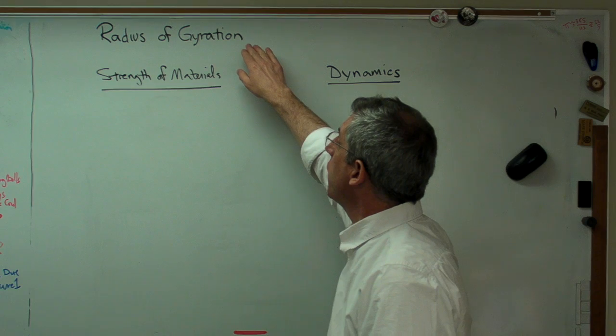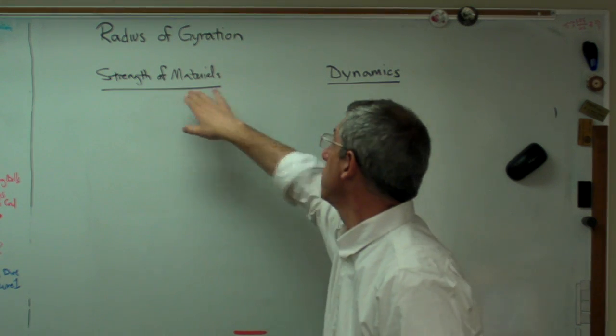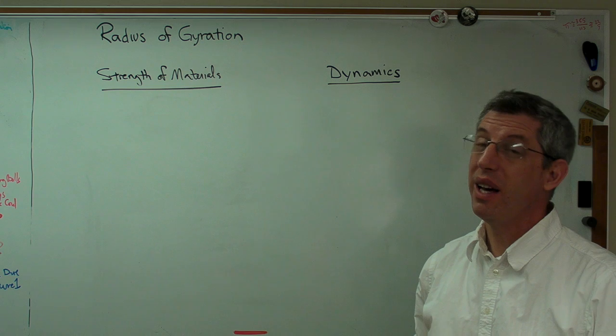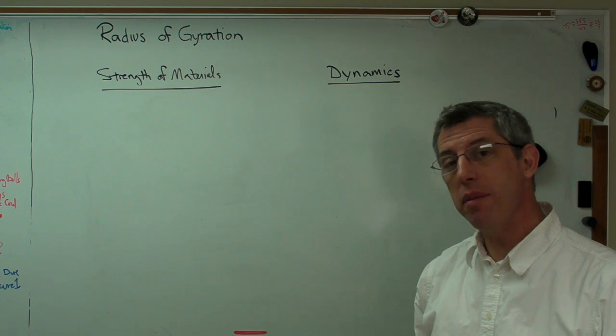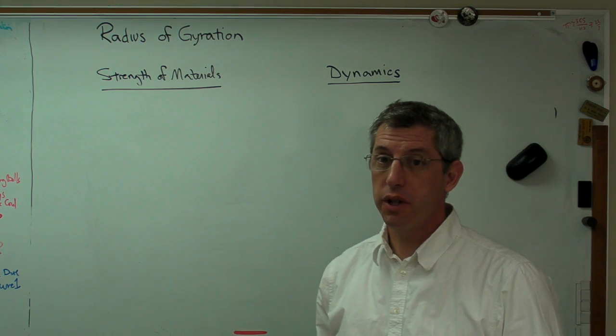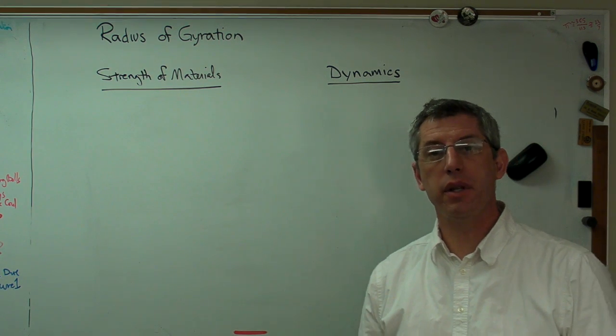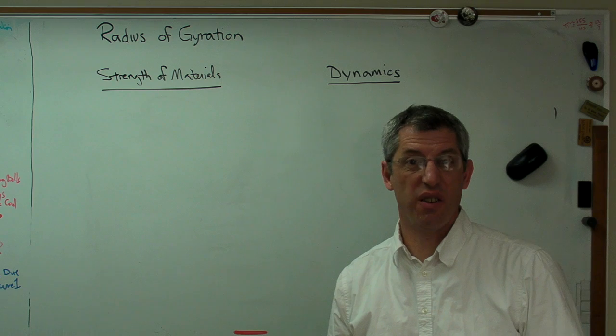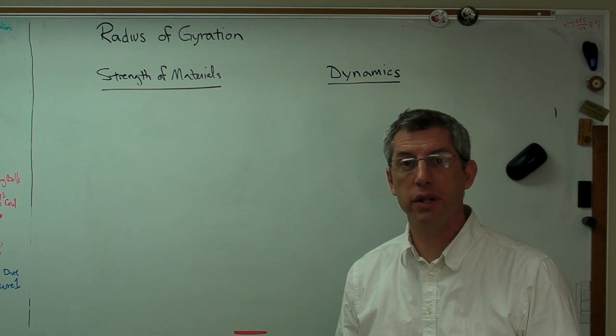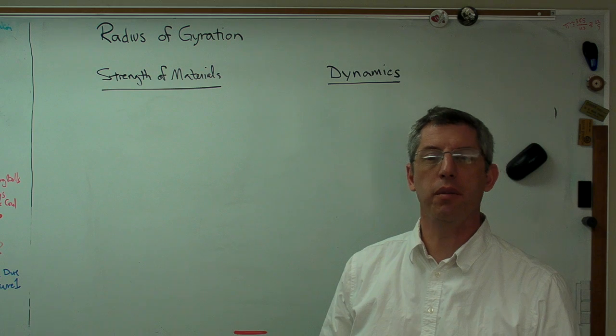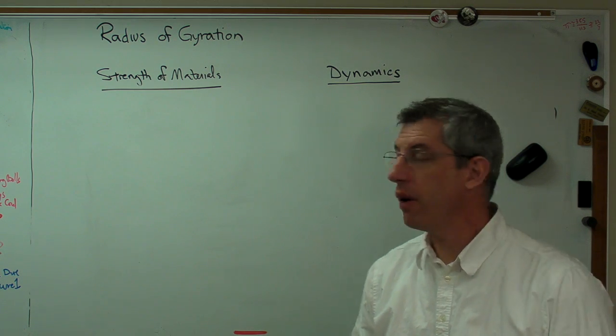Now the problem with radius of gyration is it shows up in two places. It shows up in strength of materials and dynamics. And although the name is the same, the expressions are different and they mean different things. The reason is that when mathematicians see the same expression enough times dropping out of their equations, they give it a name. And this is one of those cases. They name this expression radius of gyration.